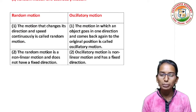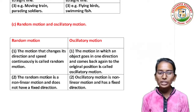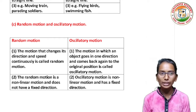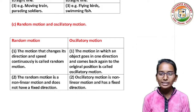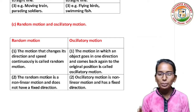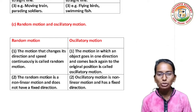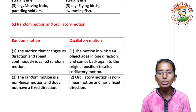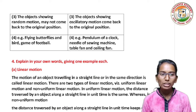Next, random motion and oscillatory motion. The motion that changes its direction and speed continuously is called random motion. Oscillatory motion is the motion in which an object goes in one direction and comes back again to its original position. Random motion is non-linear and does not have a fixed direction, so the object showing random motion may not come back to its original position.